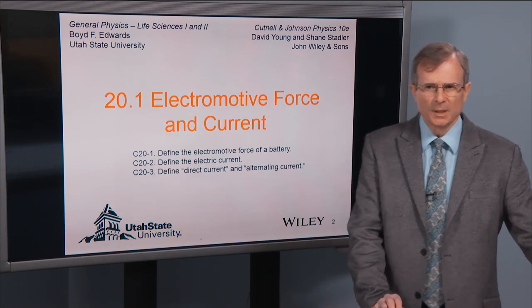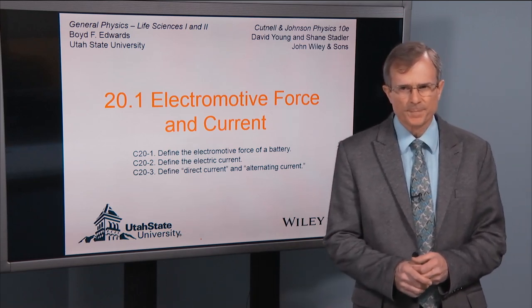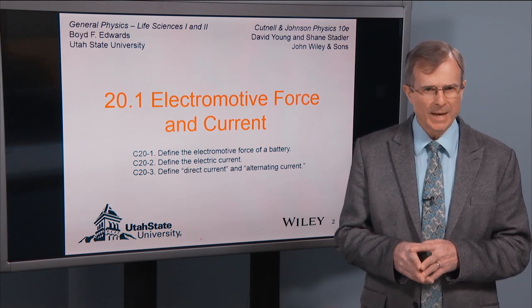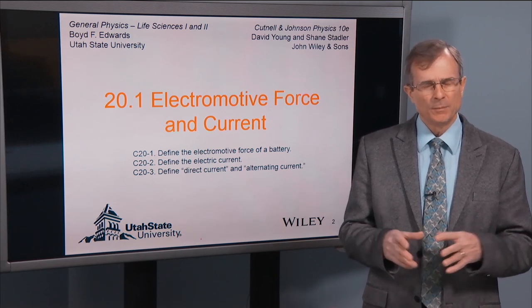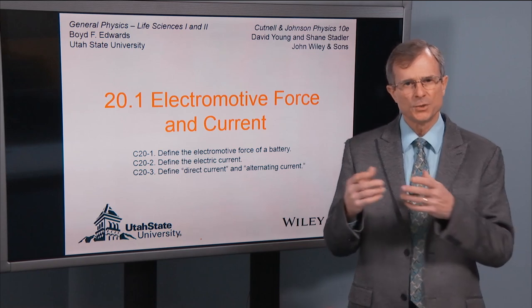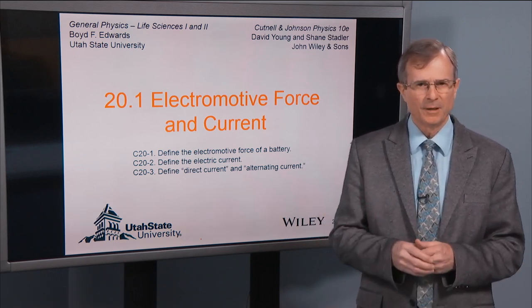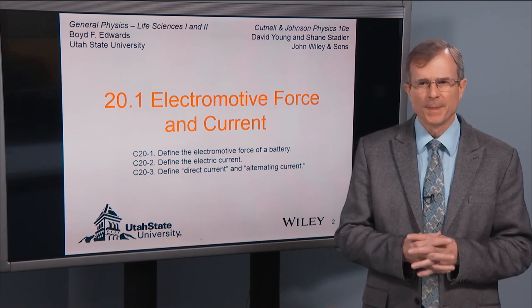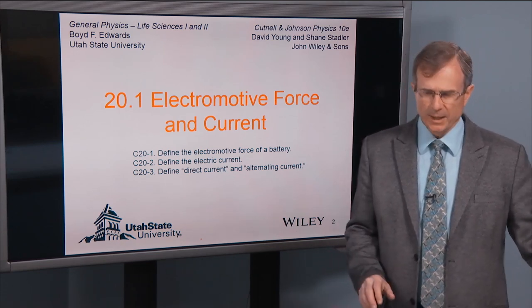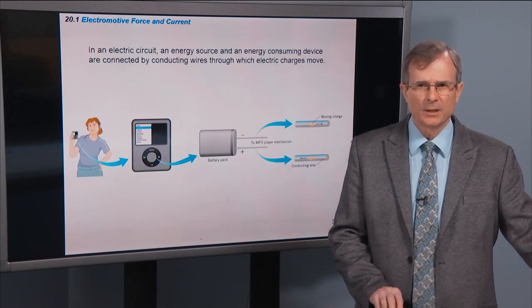The first section is to think about the electromotive force. That's a fancy name for the voltage of a battery, but we're going to make distinctions between what's known as the terminal voltage and the electromotive force, or the EMF, of a battery — which are slightly different depending on the current. We'll also define the electric current and define direct current and alternating current.